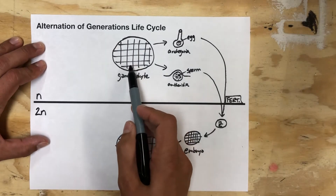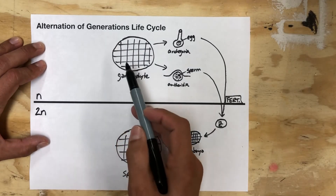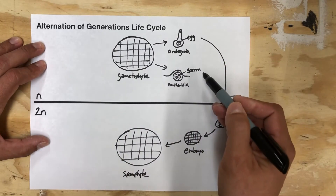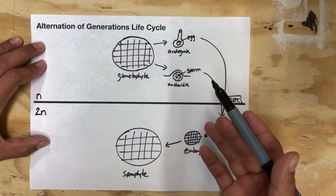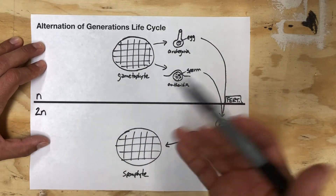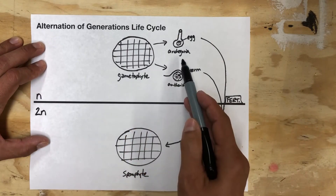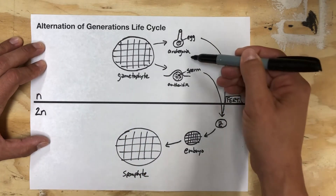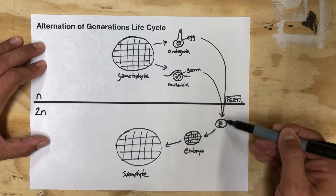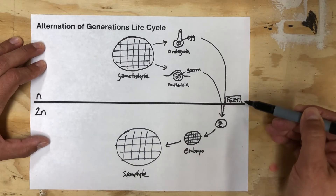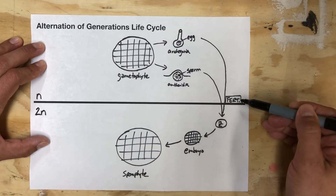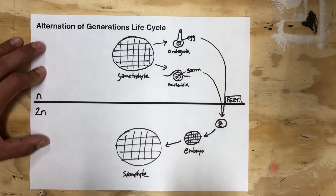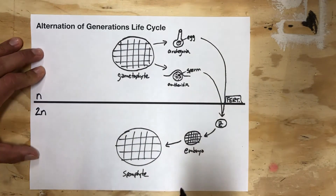Similarly, the gametophyte is haploid, so when it makes the egg and the sperm, those are also haploid — again, no change in ploidy, so this is all mitosis. We do have a change in ploidy when we go from the gametes to the zygote, and that is indicated by the fertilization event.